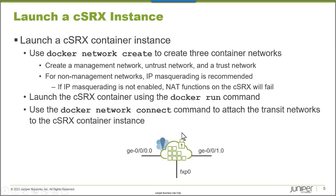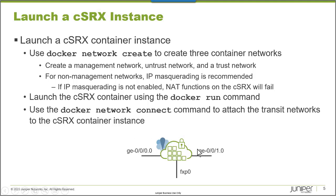Here's the example CSRx container we're going to build. We're going to use Docker to launch a CSRx instance and create three Docker networks: a management network, an untrust network, and a trust network, using the docker network create command. On the interfaces that are going to process transit traffic, if you want the CSRx to perform NAT functions, you must enable IP masquerading when you create the Docker networks — this enables the CSRx to perform NAT functions. We'll use the docker run command to launch the container, and then the docker network connect command to connect the transit networks to the CSRx instance and assign IP addresses to the two transit interfaces.